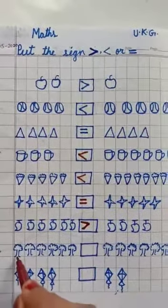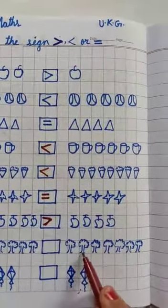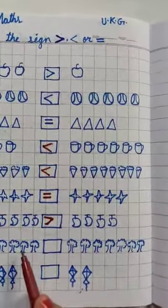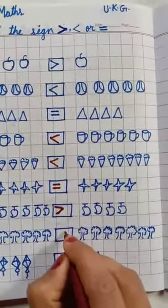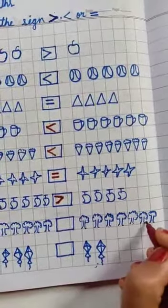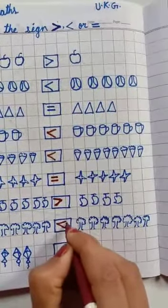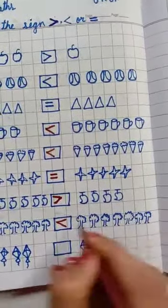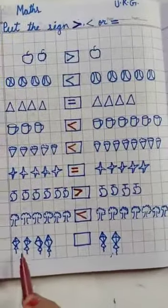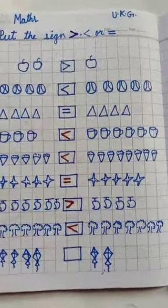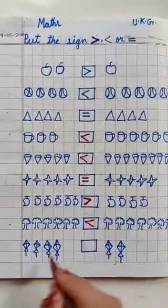Next picture: one, two, three, four, five, six — six trees, and the other side let's count: one, two, three, four, five, six, seven. This side we have six trees and the other side seven trees — this side is the lesser side and that side is the greater side. Now the next picture: one, two, three, four — four kites here, and the other side we have two kites. This side is more side and the other side is the lesser side.